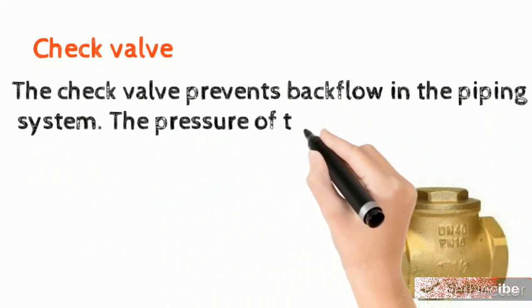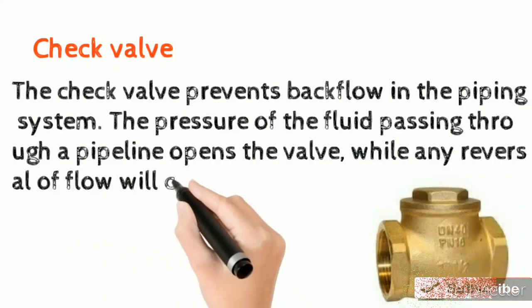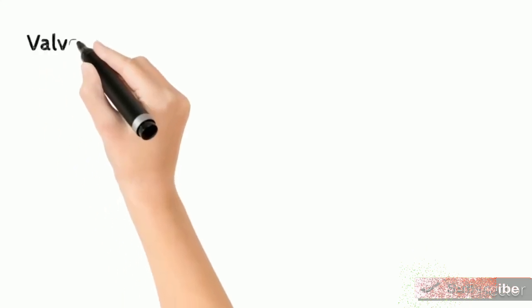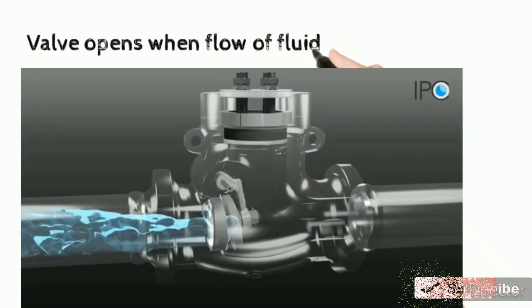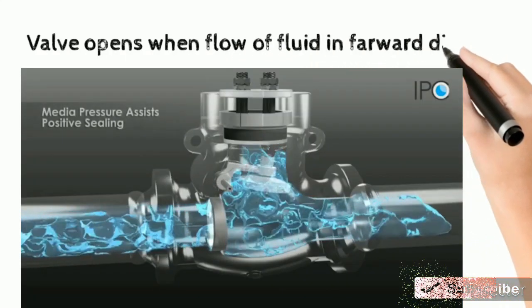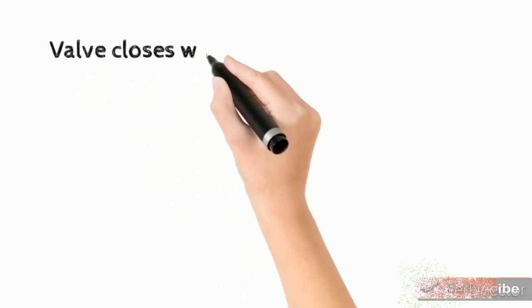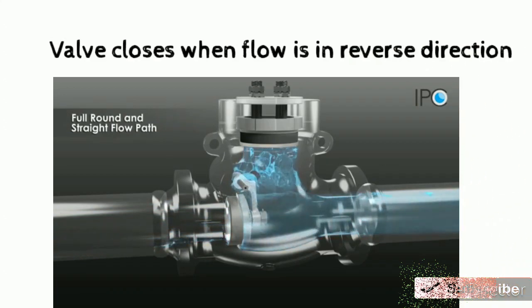The check valve prevents backflow in the piping system. The pressure of the fluid passing through a pipeline opens the valve, while any reversal of flow will close the valve. Valves open when flow of fluid is in the forward direction and close when flow of fluid is in the reverse direction.